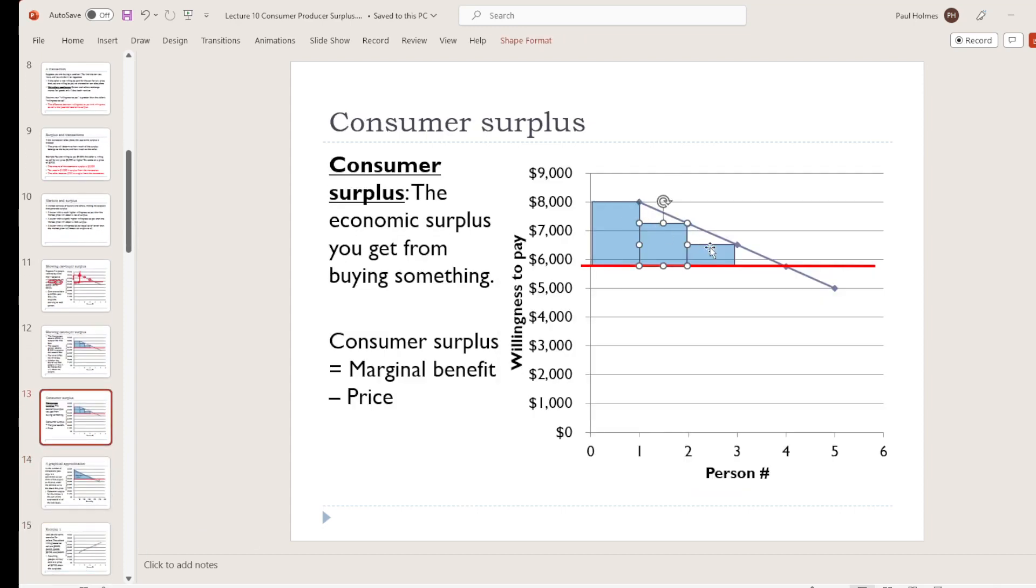These areas taken together, we call the consumer surplus in this market. It's the total amount of surplus over all of the buyers in this market. For each person, we calculated it as the benefit that they would get from trading, their marginal benefit minus their actual price. And we did that for all of the people in the market who were going to trade.